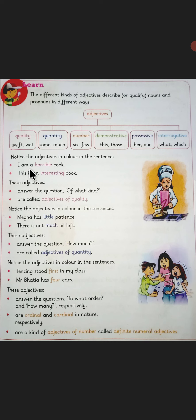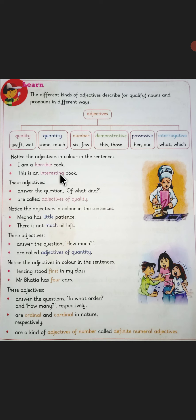Now let's take some examples given over here. Notice the adjectives which are given in colour in the sentences below. The first example is: 'I am a horrible cook.' There is a cook over here and the person says for himself, 'I am a horrible cook.' The other sentence says, 'This is an interesting book.' Now the words horrible and interesting are describing words. Horrible describes the quality of the cook, and interesting describes the quality of the book.